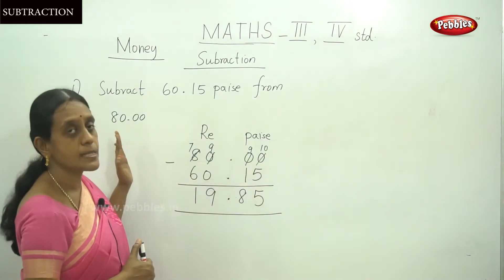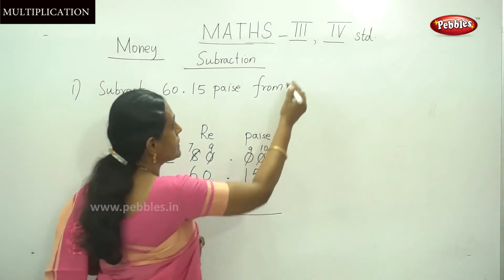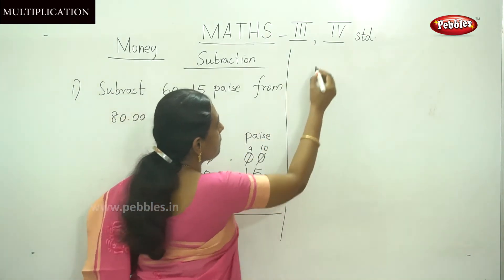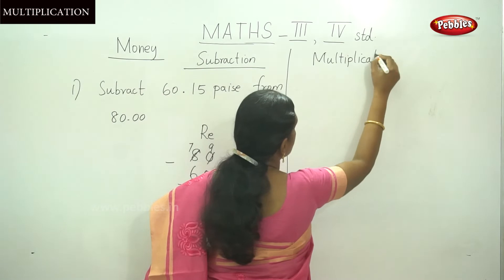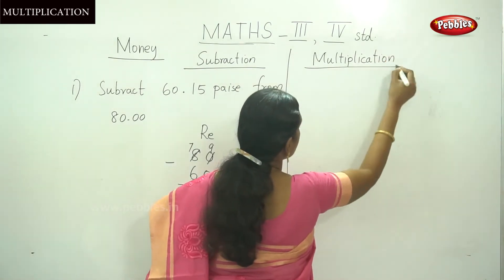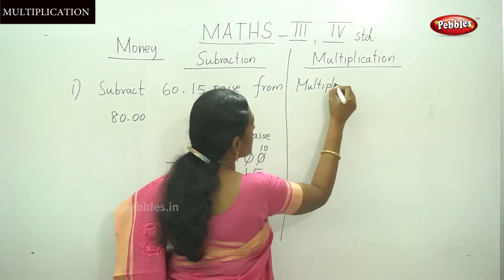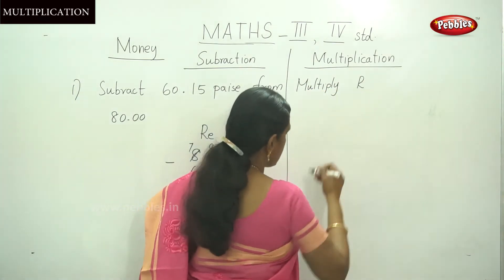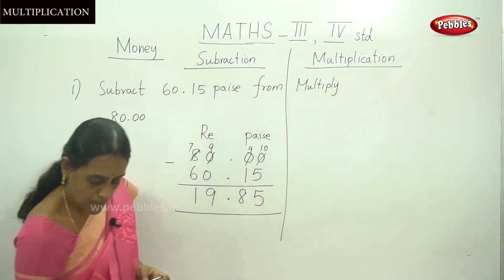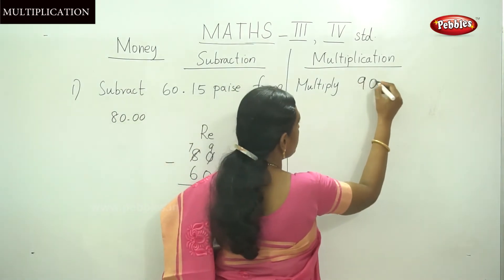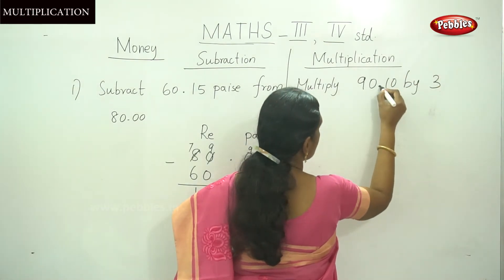This is the method for subtraction. Next we are going to Multiplication — Multiplication in Money. The question is: multiply 90 Rupees and 10 Paise by 3.